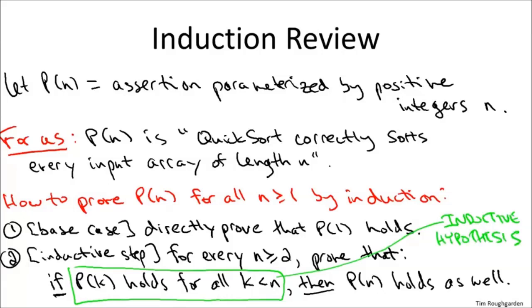So if you manage to complete both of these steps, if you prove both the base case, that P(1) holds, you argue that directly, and then also you argue that assuming the inductive hypothesis, that the assertion holds for all smaller integers, it also holds for an arbitrary integer n, then you're done.